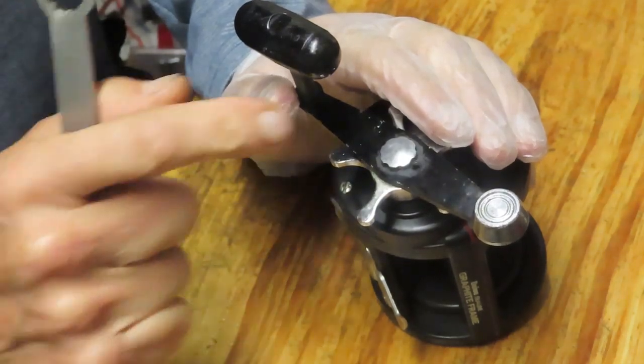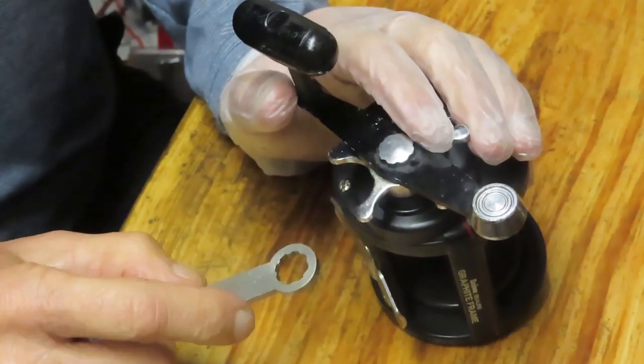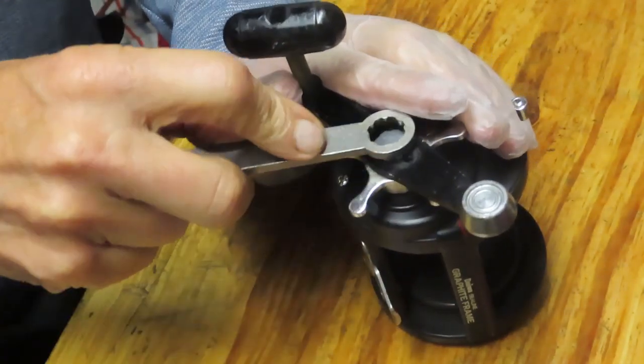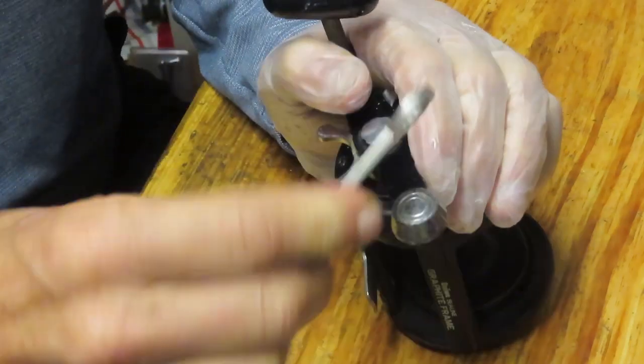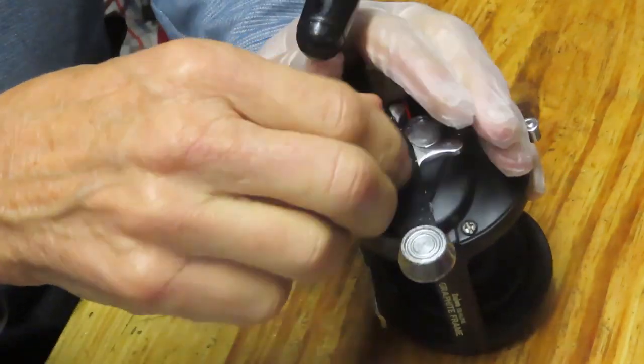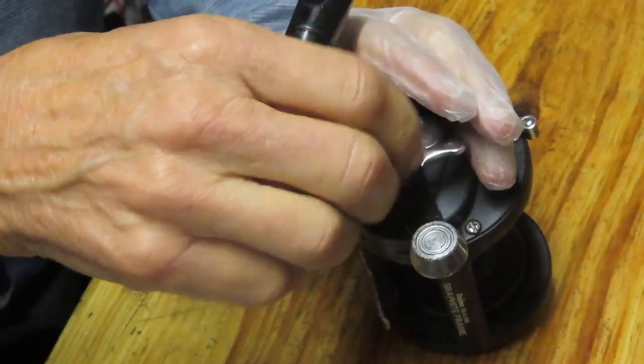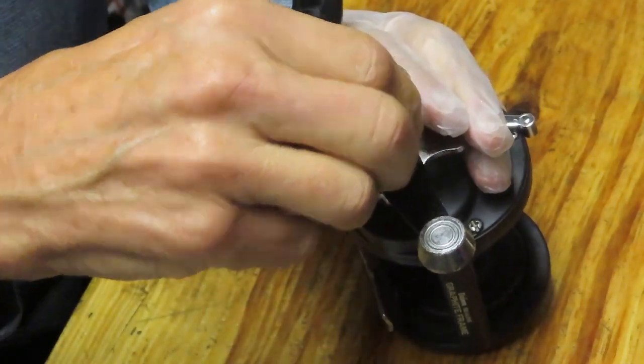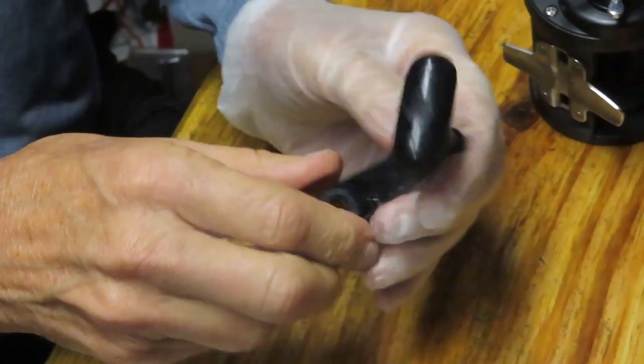We took out the screw that holds the handle screw in place. That handle screw, even though it's a Daiwa reel, can come off with a Penn reel wrench if you don't have a Daiwa wrench. Just an interesting fact to note. We'll take that handle off.